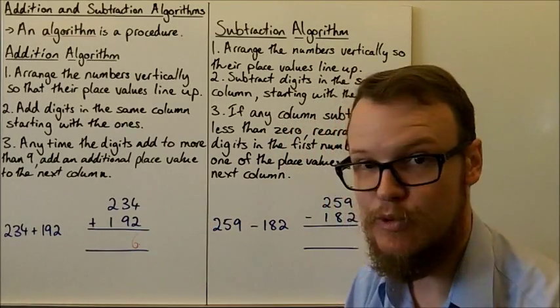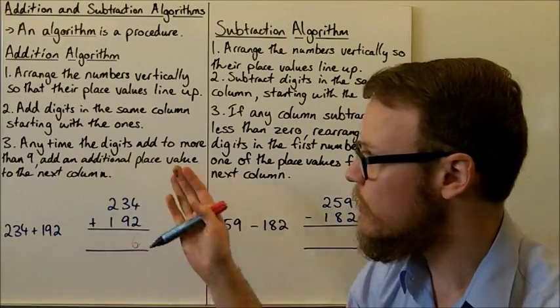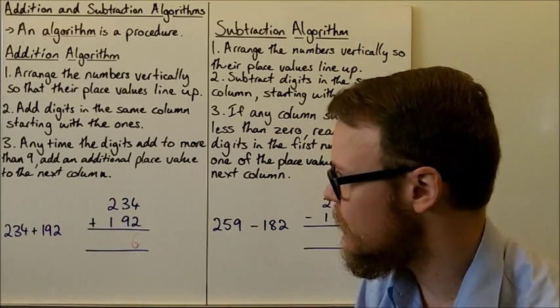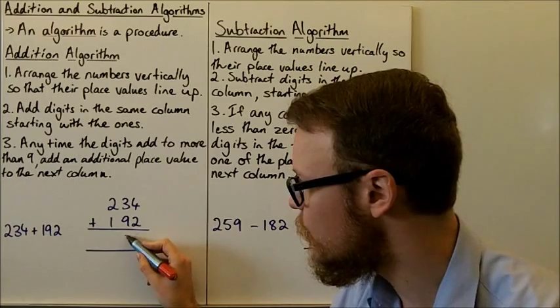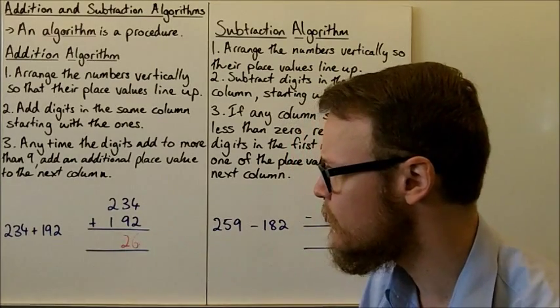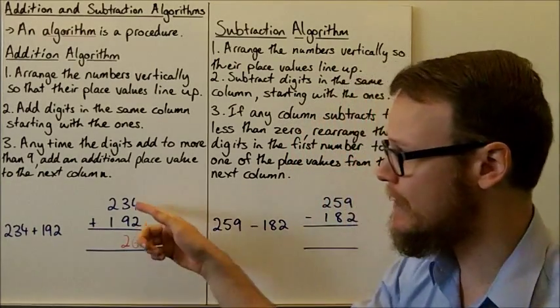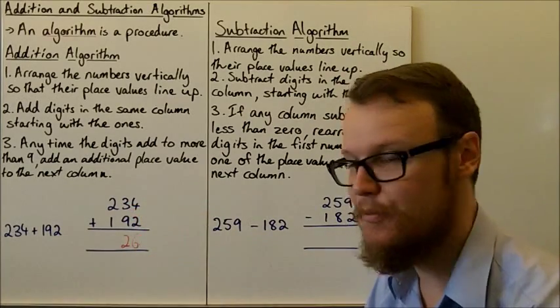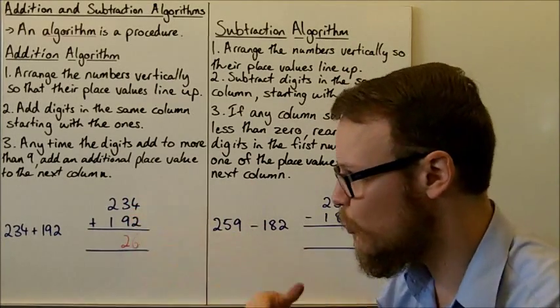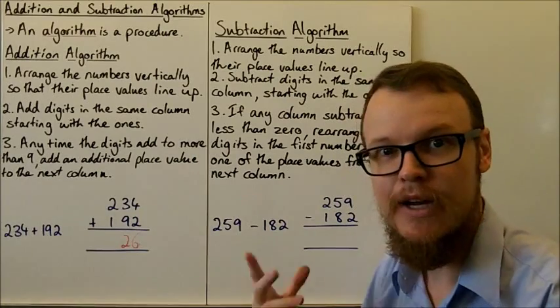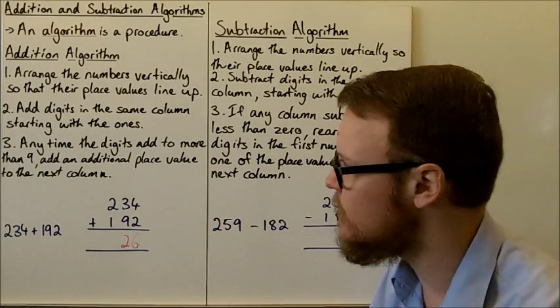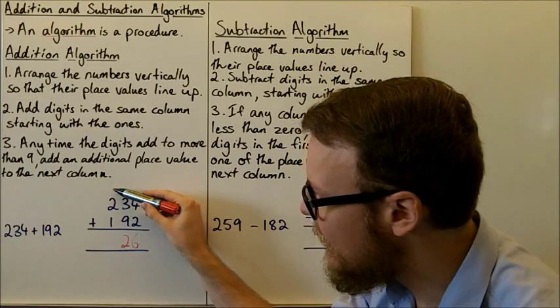3 plus 9 is equal to 12. So we've added up to more than 9. So that means we need to put the 2 down in the tens column here. And because we've essentially counted up, we've gone I've got 3 and I'm counting up, adding more and more and more. Oh, I've got up to more than 9. I need to put another place value in the next column and keep adding.